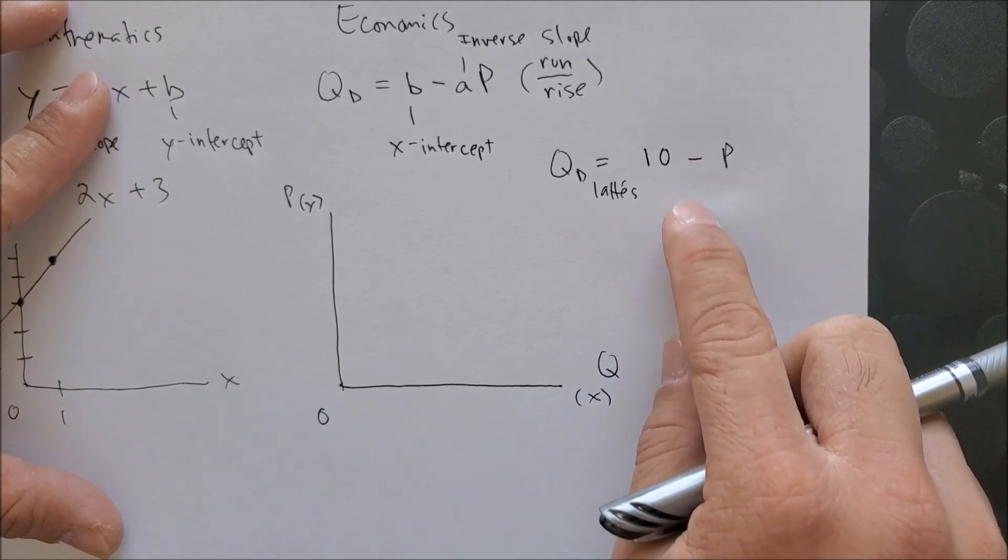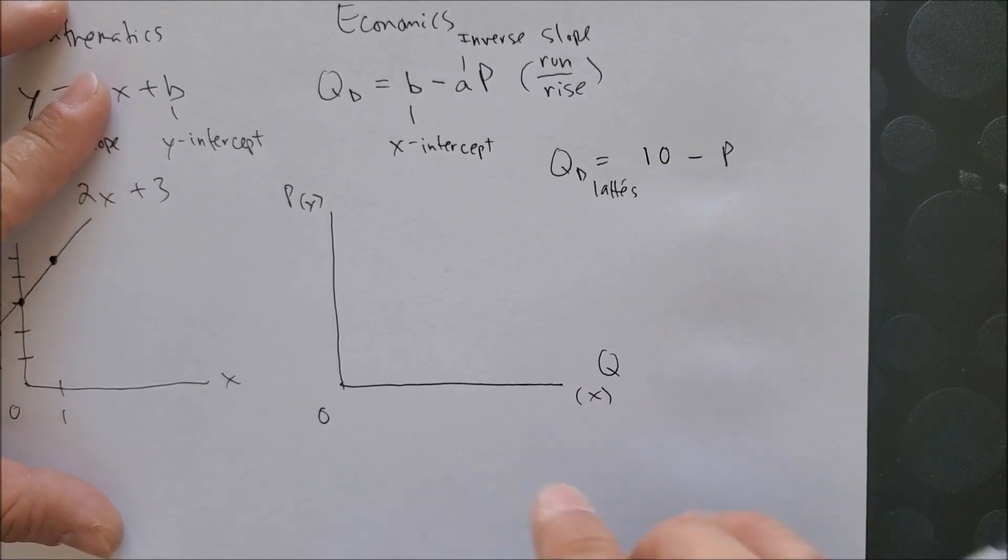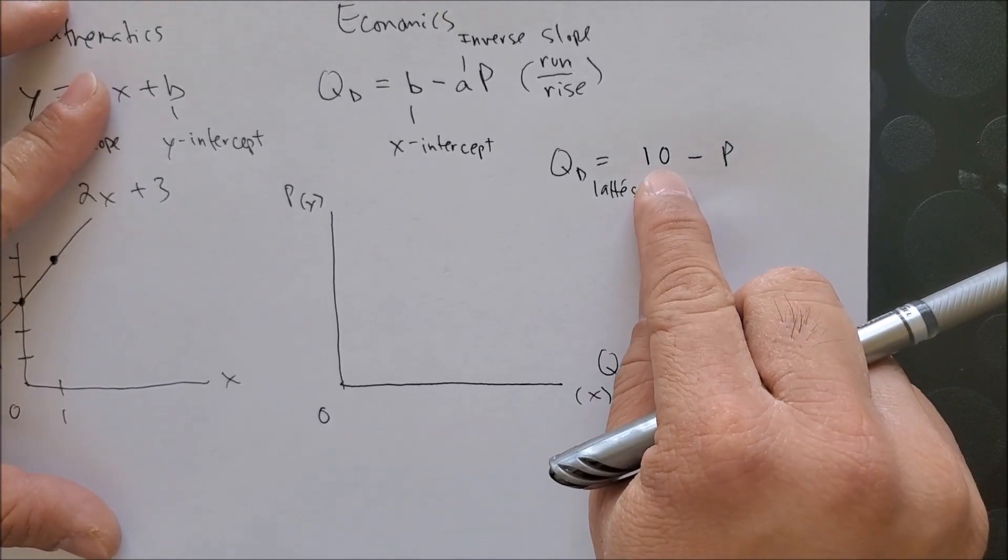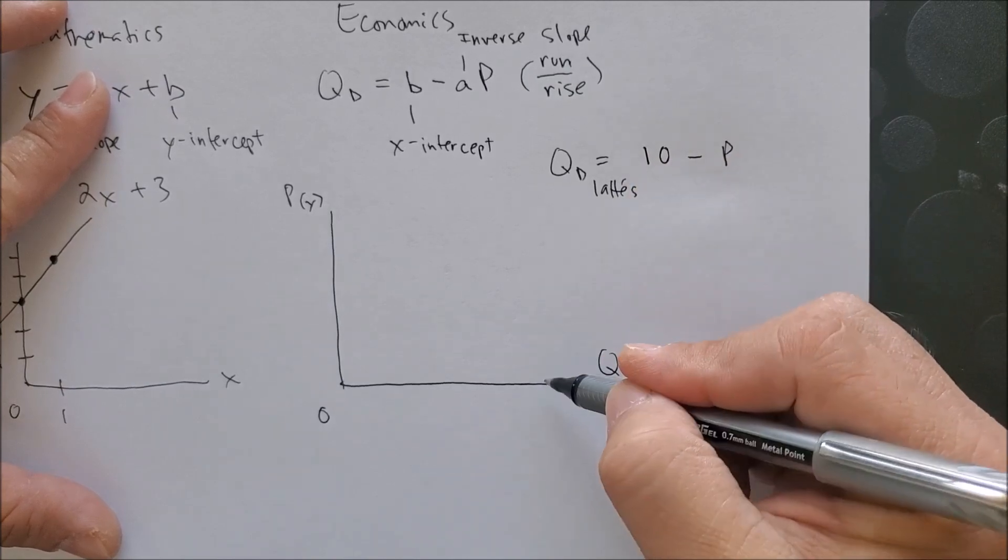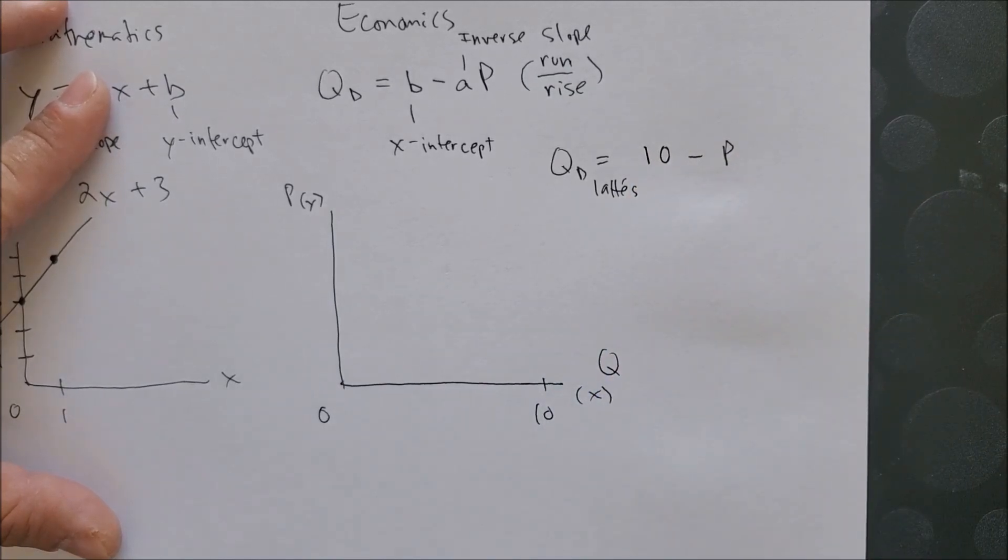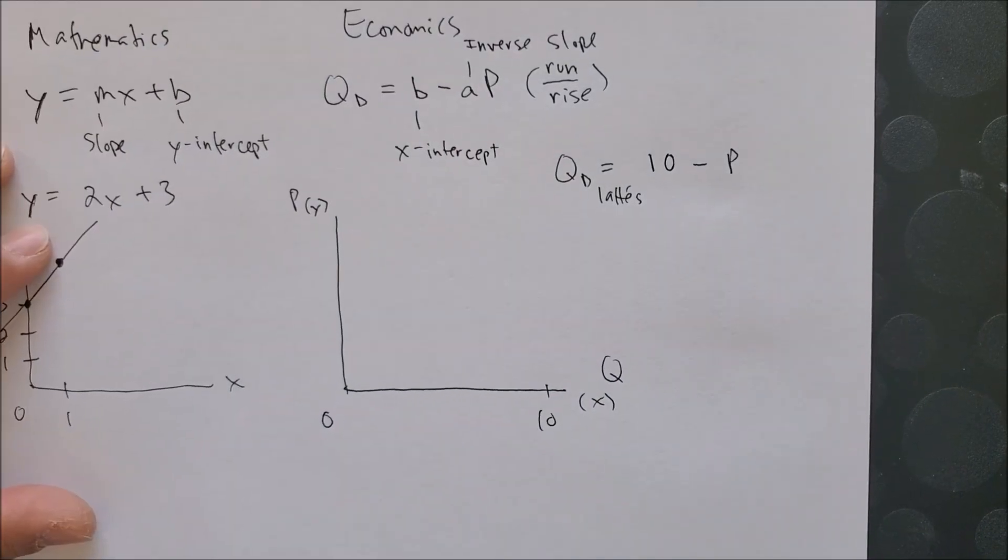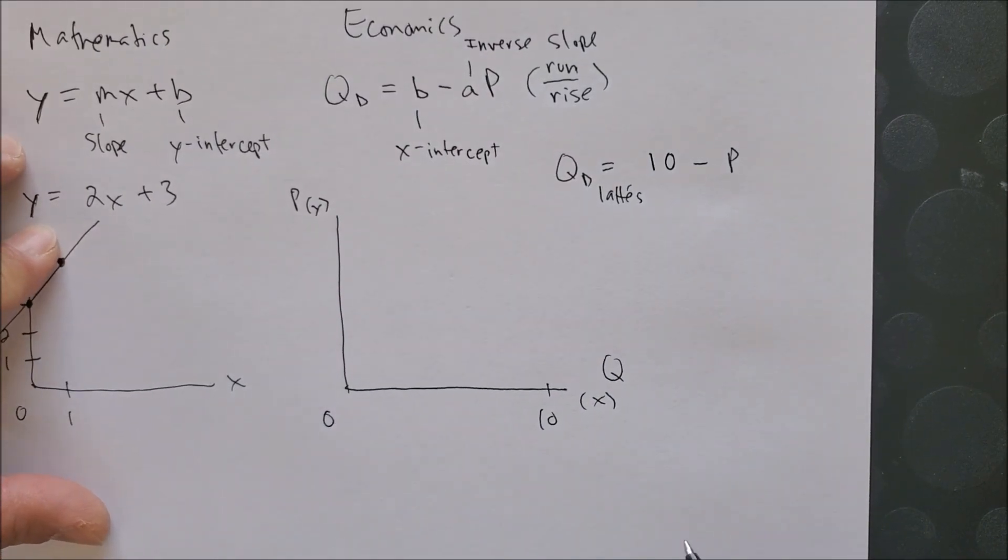So now we can go ahead and graph this on our graph. So here we have 10 as our x-intercept, and the x-intercept is over here. So now we can put, so if 10 is our x-intercept,